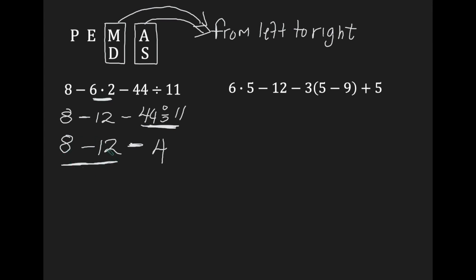A little trick I use in class: this looks like a subtraction, and your smaller number is first. So we subtract normally — 12 minus 8 gives you 4. But because the smaller number is first, your answer will be negative. Because you can't really take 12 from 8 — you get to 0 and then 4 more, so that's where you get negative 4.